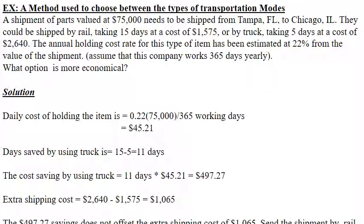The cost saving by using truck equals 10 days multiplied by the daily holding cost of $45.21, which equals $497.27 saved in inventory holding costs by switching from rail to truck.